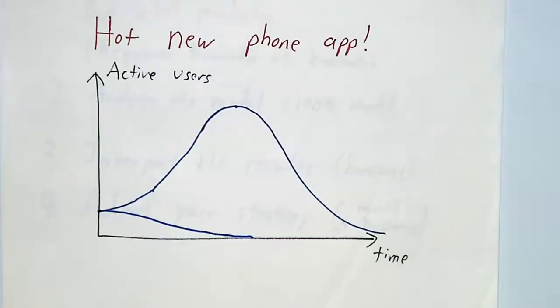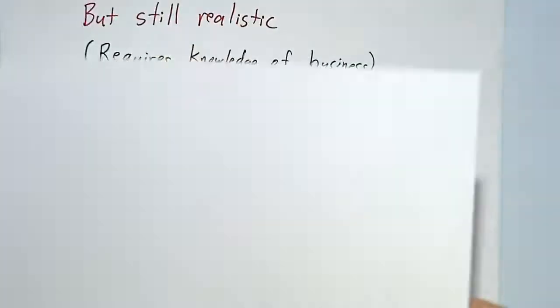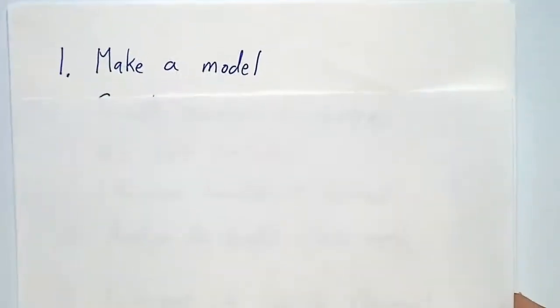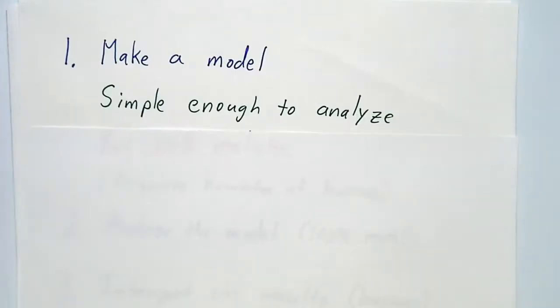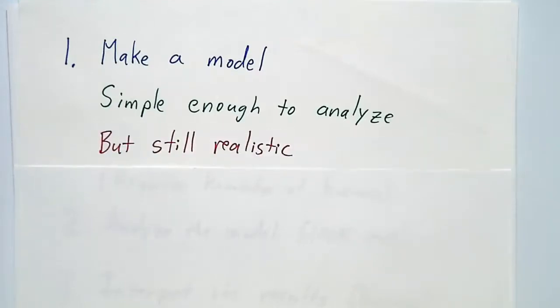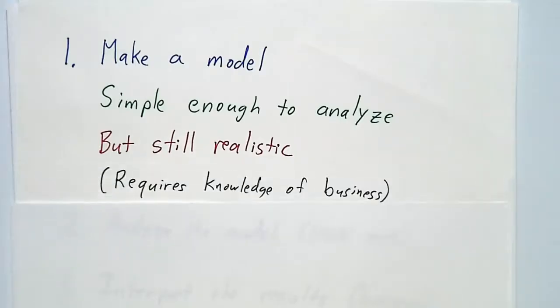What are the things that make something succeed and others fail? For that, we're going to have to come up with a mathematical model. The thing about a model is it needs to be simple enough that you can actually solve it. If you have a model with 1,000 different variables, that's hopeless. But it still has to be realistic. Determining what is realistic — what are the important things to model and what you can ignore — requires some knowledge of business and also some knowledge of math.